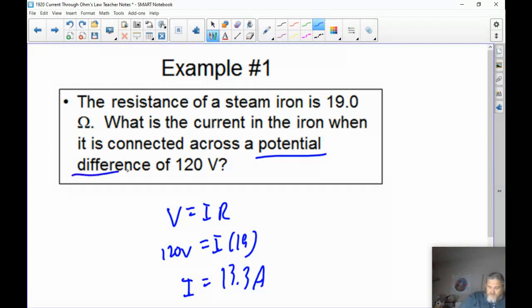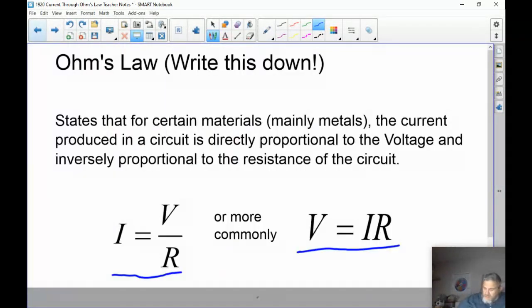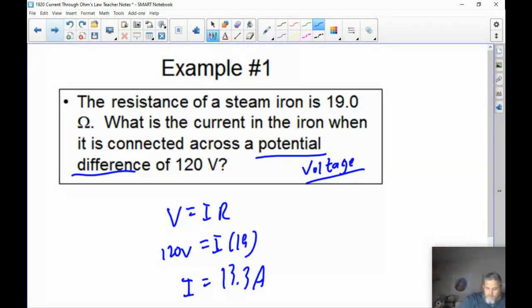Now a couple of things. When you see the word potential difference or potential, that's the same thing as voltage. Basically, how a battery pushes electrons is to create a difference in potential energy between the positive and the negative, and that pushes the electrons through. So when you see this word potential difference, it's the same thing as voltage. V is voltage, I is current, R is resistance. So the current is 6.3 amperes.